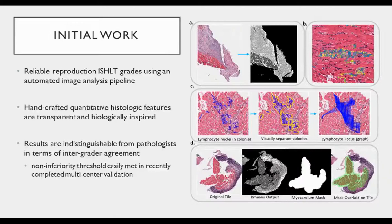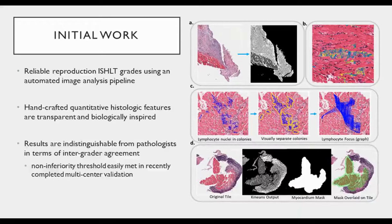Once we did basic segmentation, we used proximity graphing features to identify which lymphocytes are clustering closely to one another. Through thresholding of when to lump or split clusters, we were able to reproduce one of the key components of ISHLT grading: lymphocyte foci. We also identified specific tissue compartments — myocardium versus endocardium — to better describe where lymphocyte activity is occurring. When you put all this together, the end result is that the algorithm is indistinguishable from human pathologists. We were non-inferior in terms of inter-rater agreement and looked essentially like another pathologist in the room.